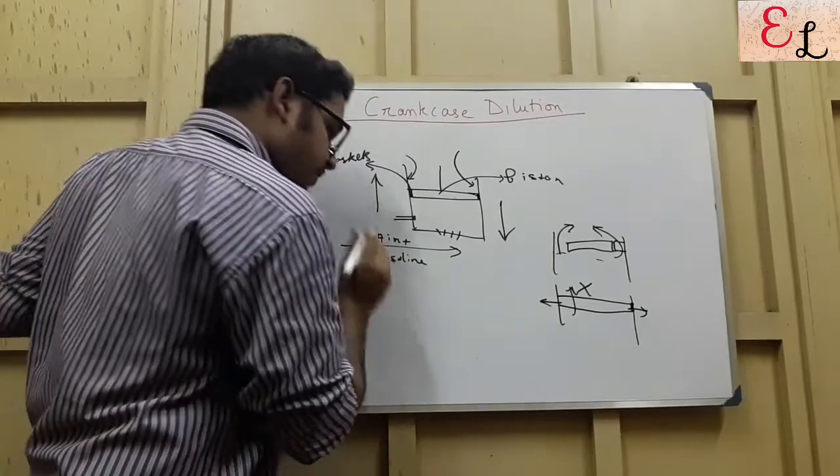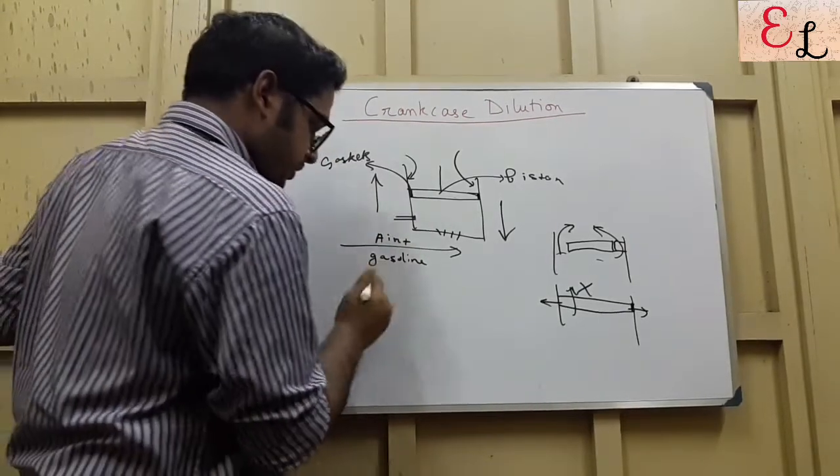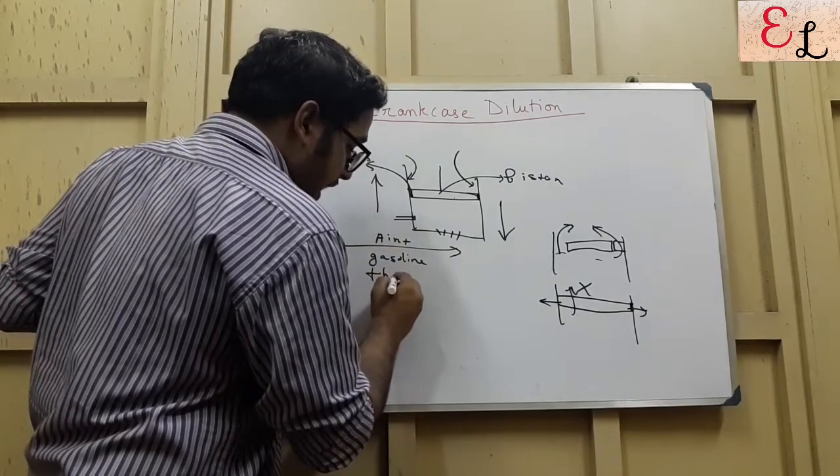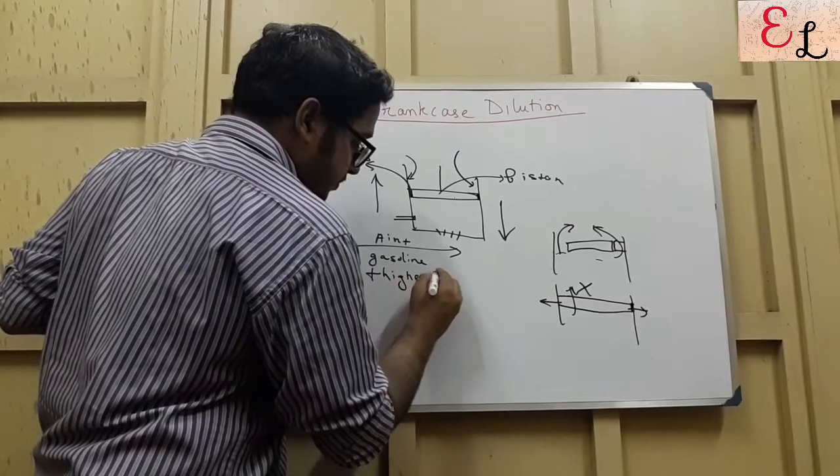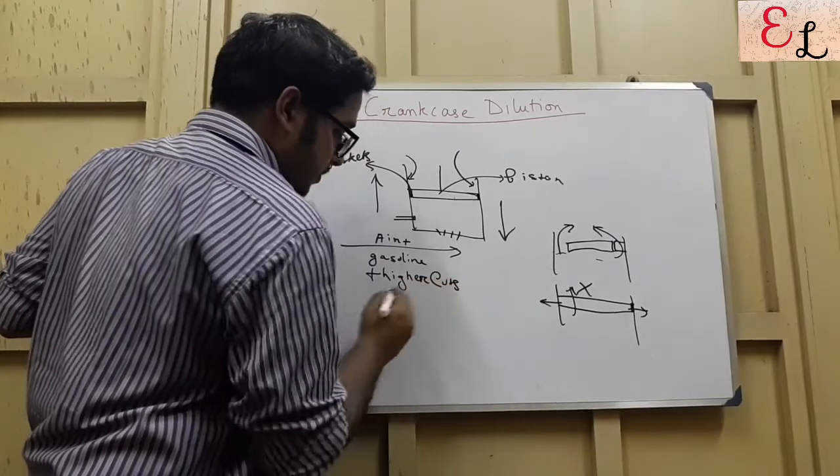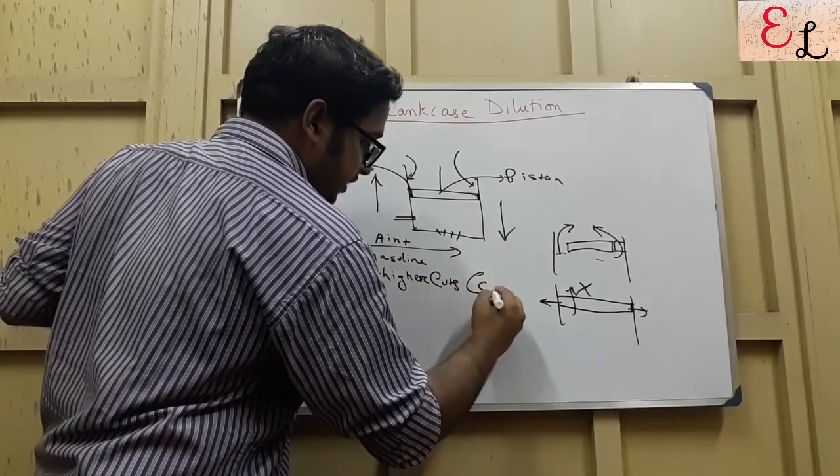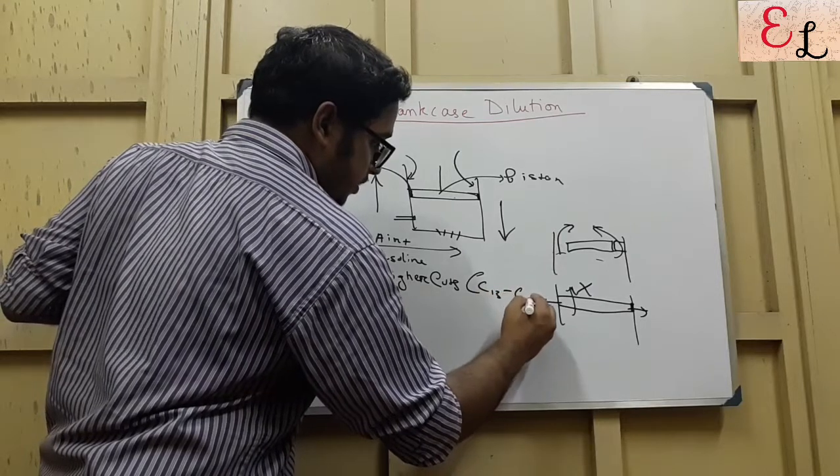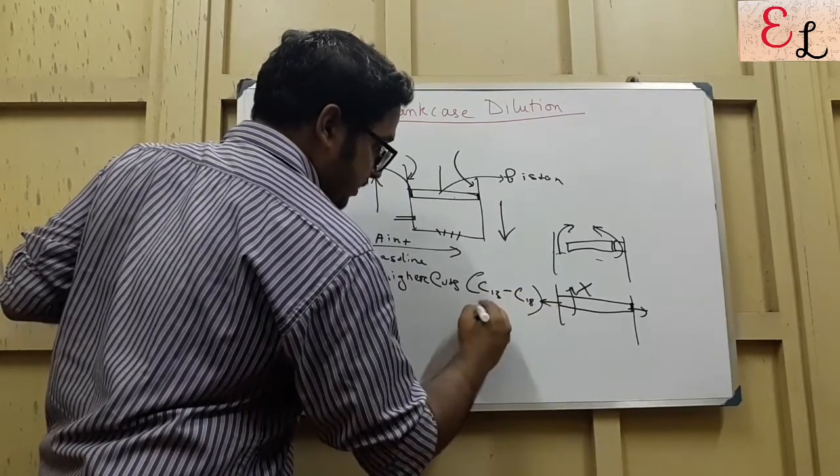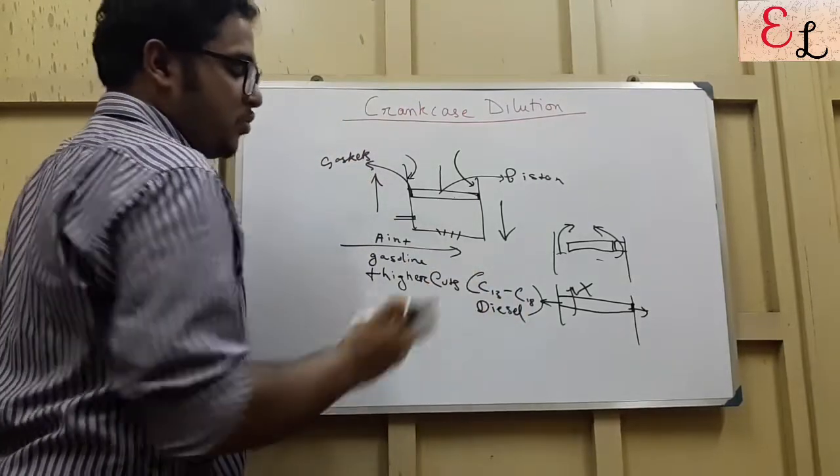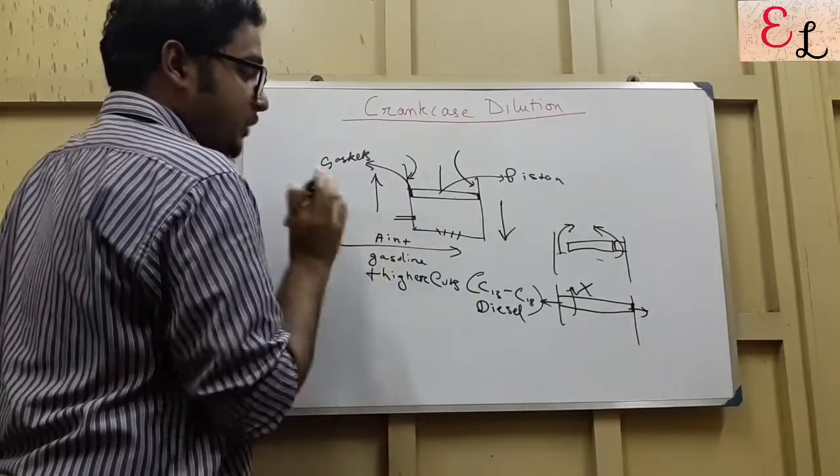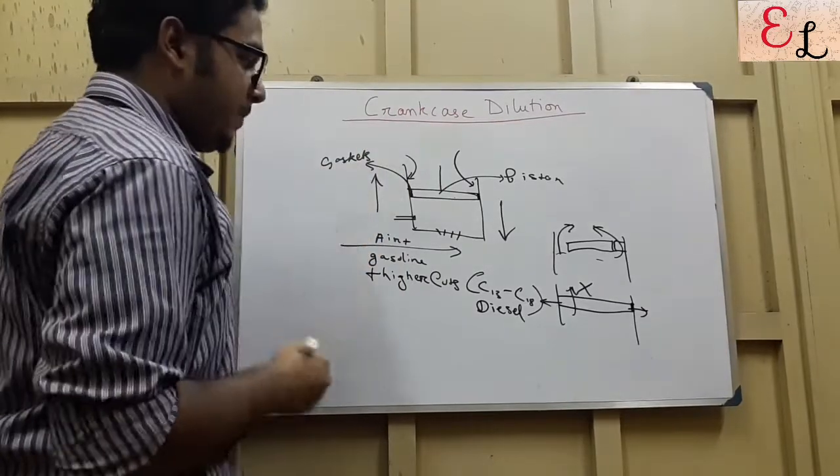So, now, let's come to our topic. If gasoline is mixed with some higher cuts, like C-13, C-18, that is kerosene, or diesel. By mistake, or deliberately, someone has mixed some amount of diesel or kerosene into gasoline and sent it into the spark ignition IC engine. So, what will happen?